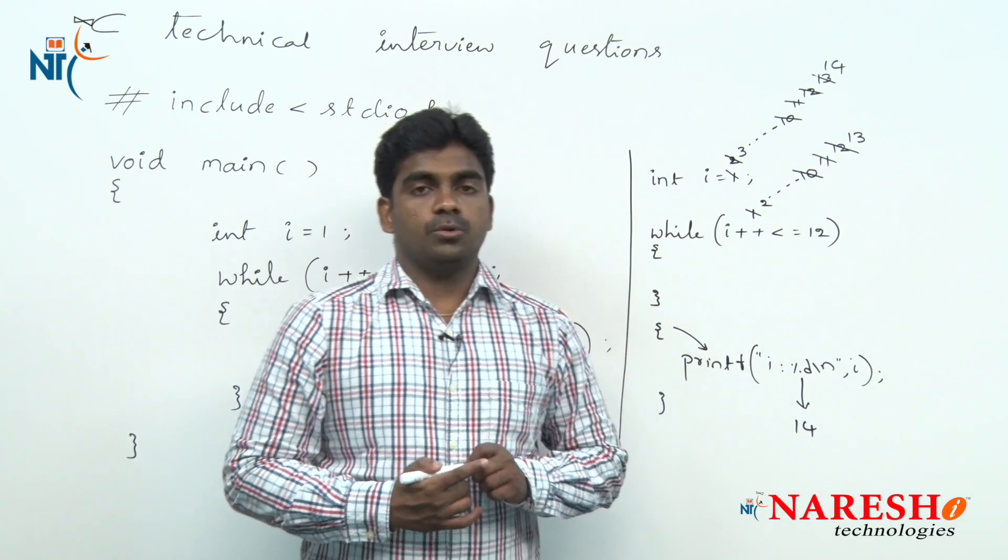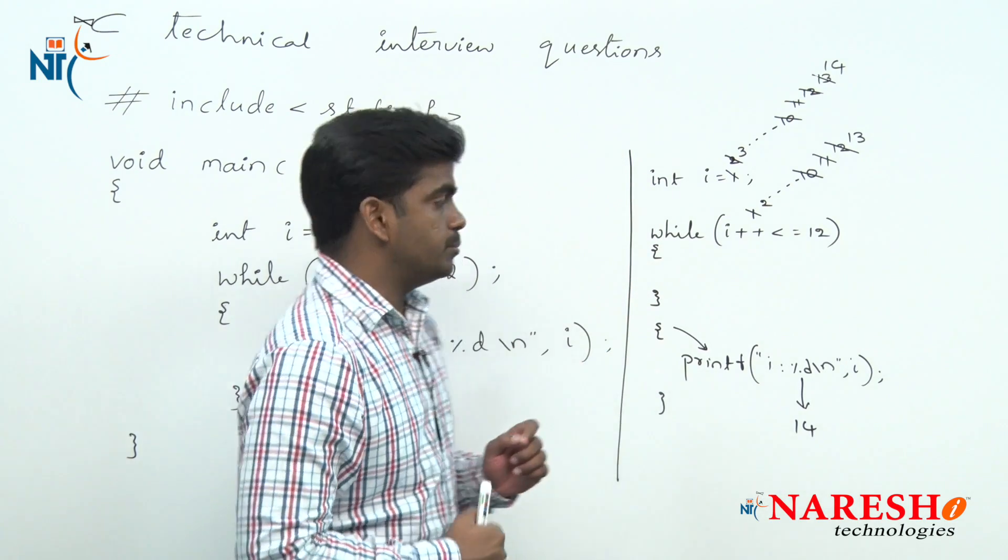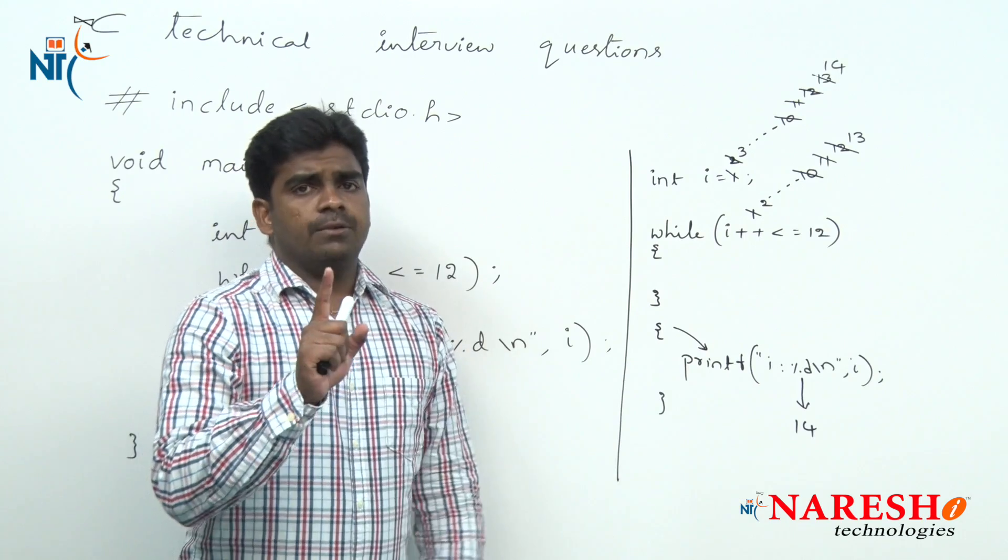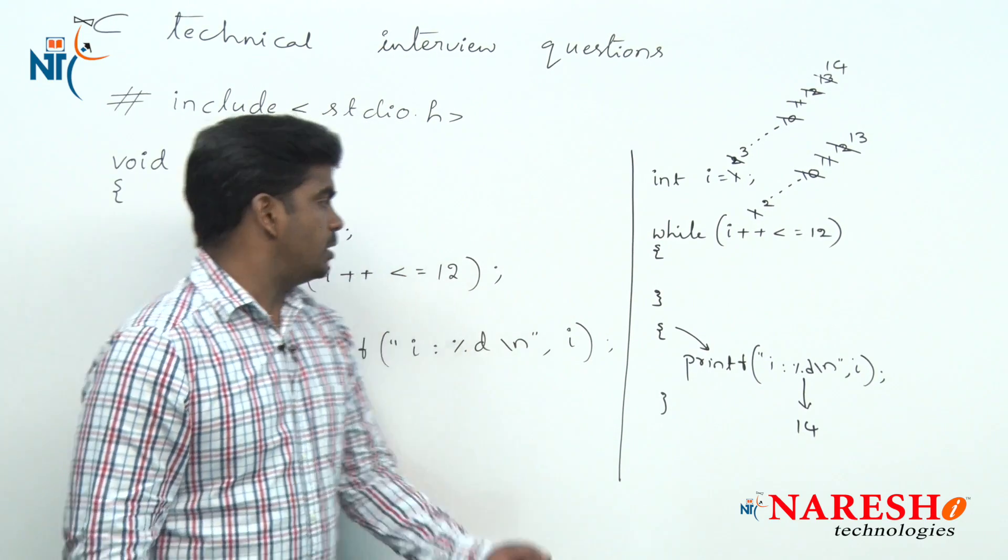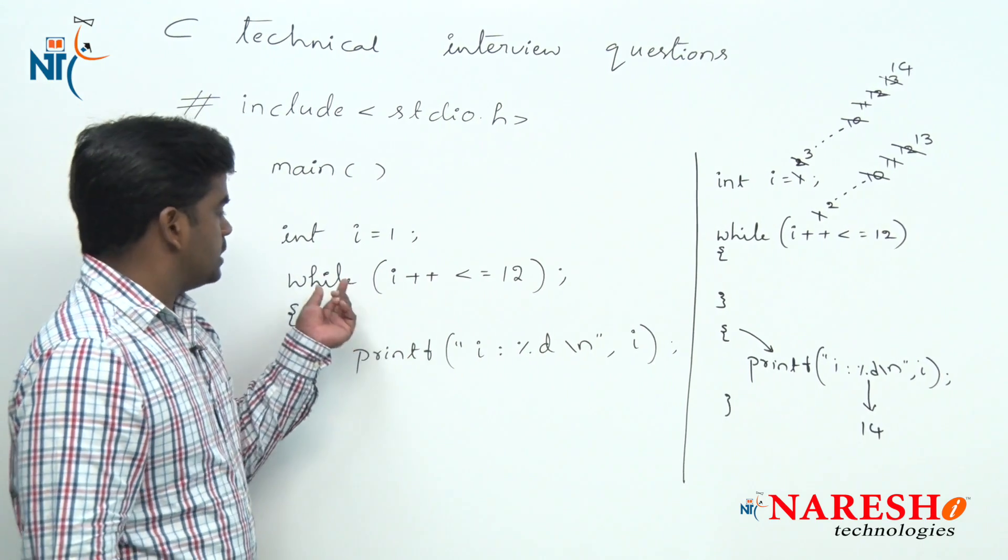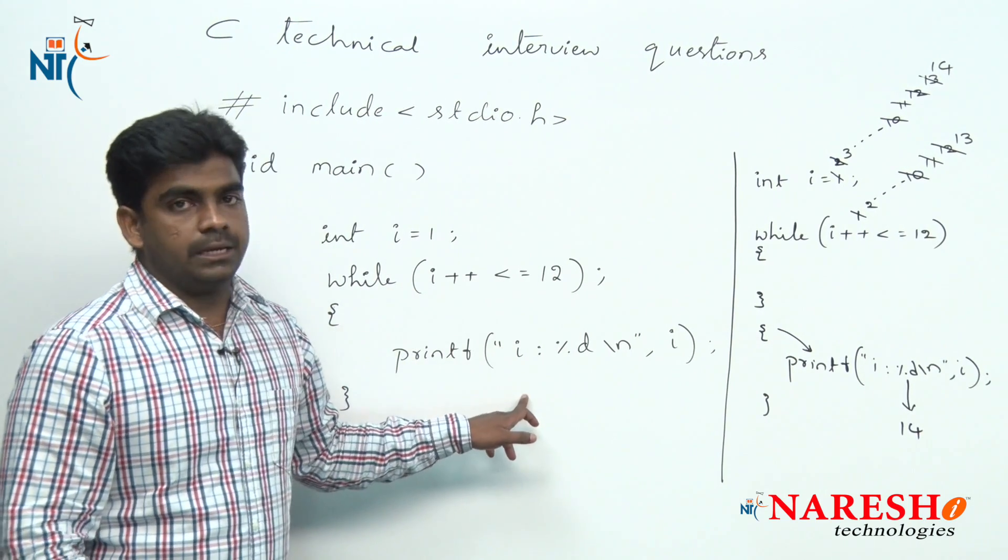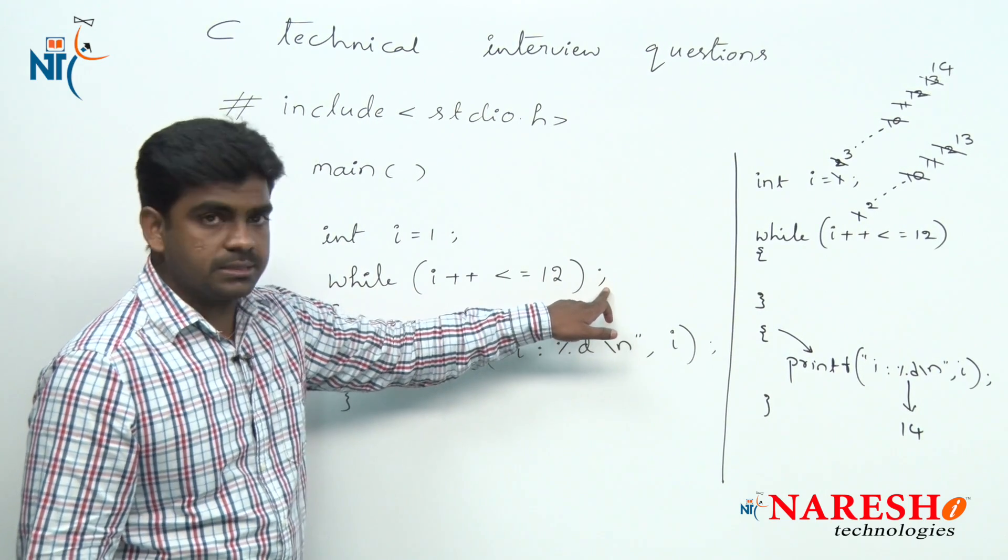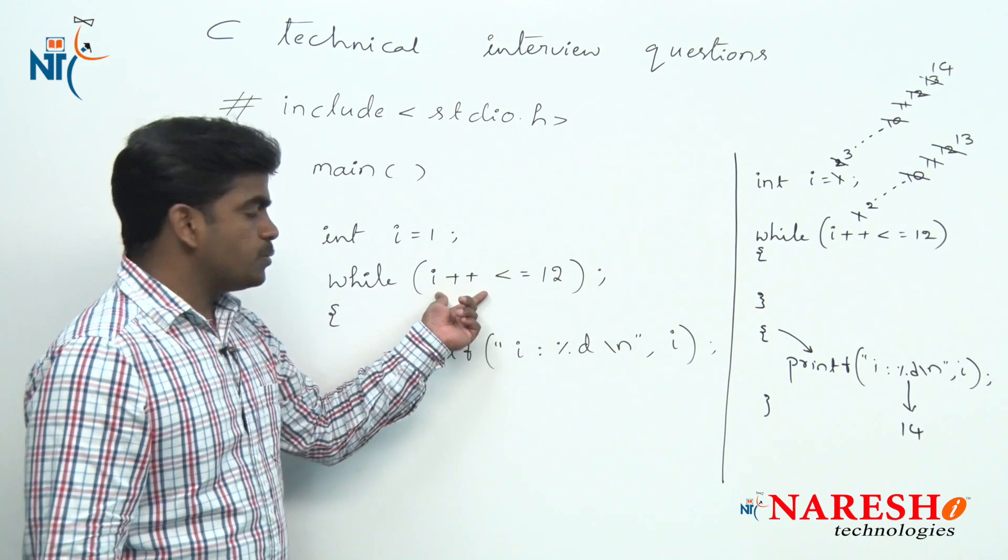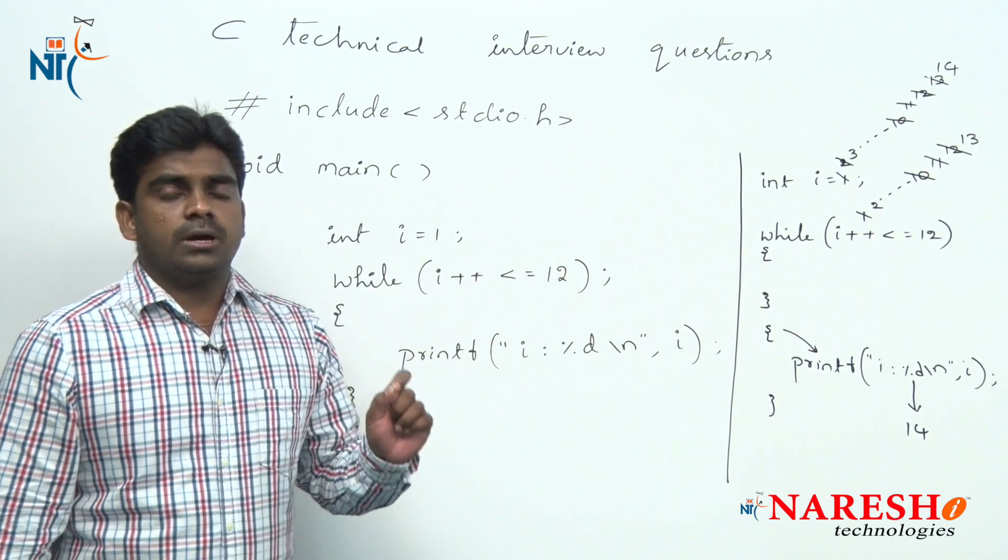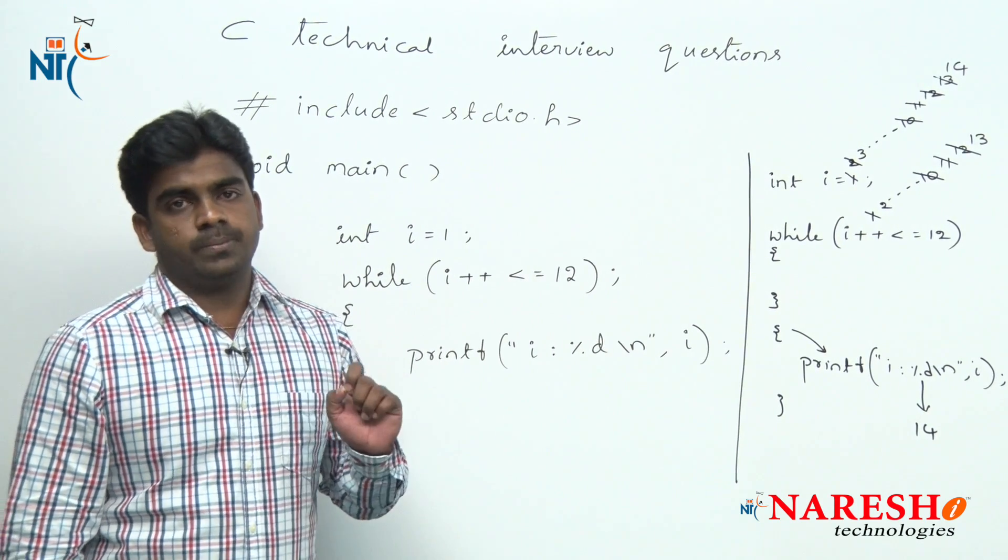Here it will print the value is 14. So output of this program is 14. This is very very important, it will execute i value only one time, only one time it will execute. We are thinking that this is the block of this while loop, so every time it will print i. No, here a semicolon is there at the end.